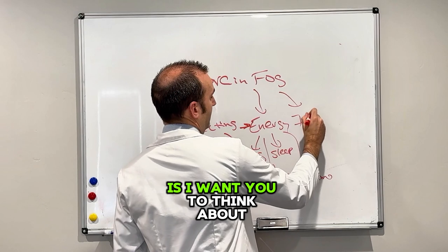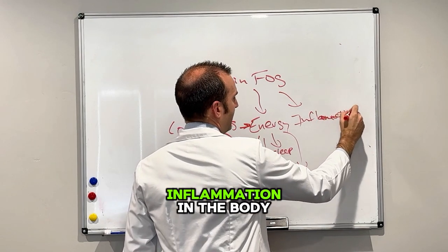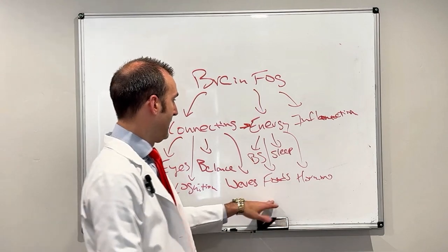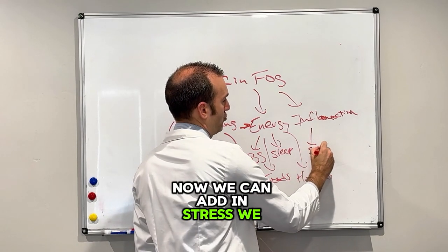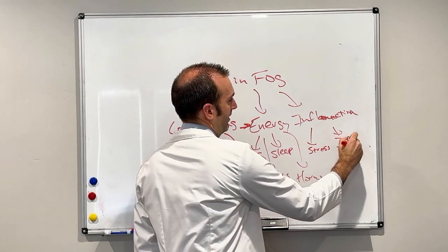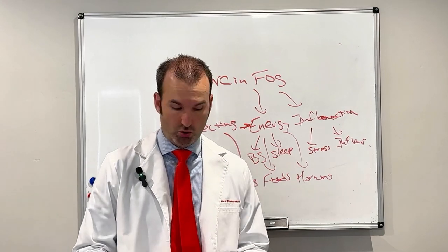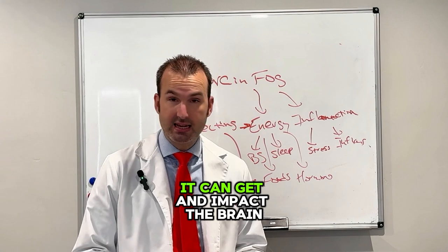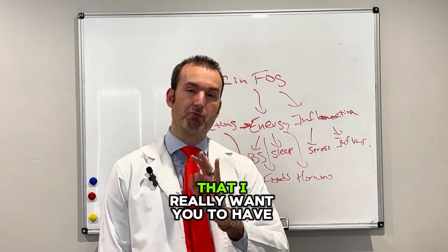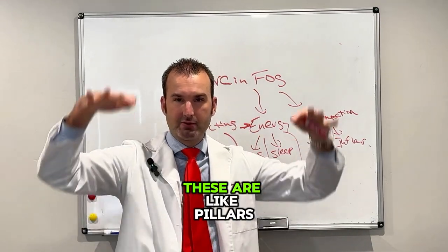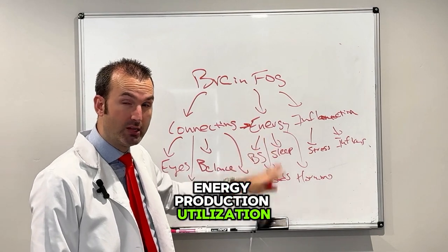Lastly with brain fog, I want you to think about inflammation. Inflammation in the body can create inflammation in the brain. All of these things — sleep, blood sugar, foods, stress, infections — are all things that can contribute to the amount of inflammation in the body. Inflammation in the body, while it should stay within the body, can get an impact in the brain, especially the longer you have these inflammatory triggers going.